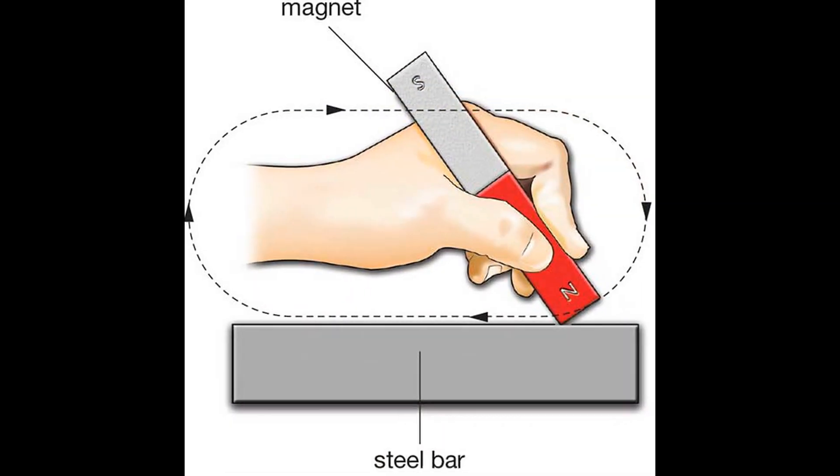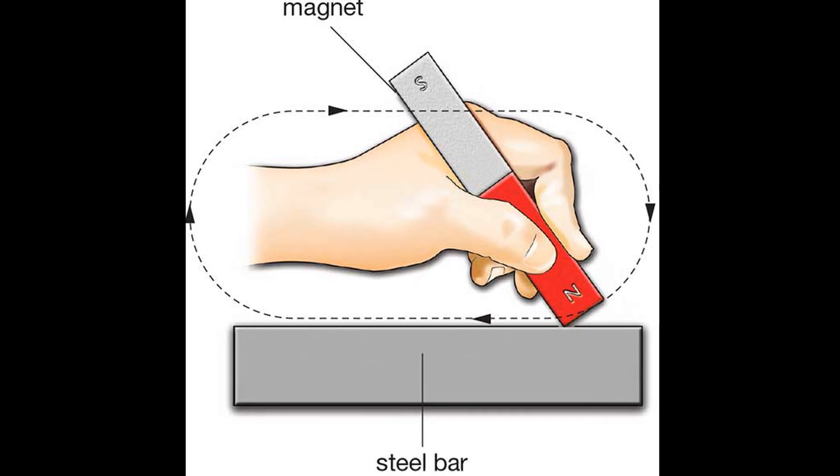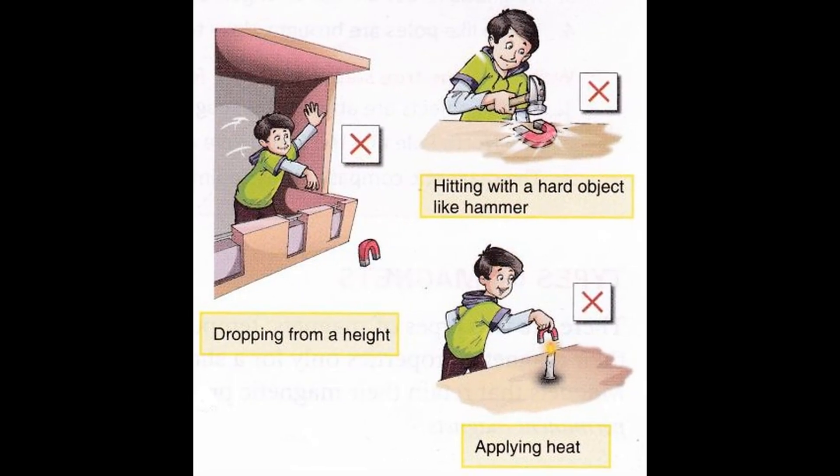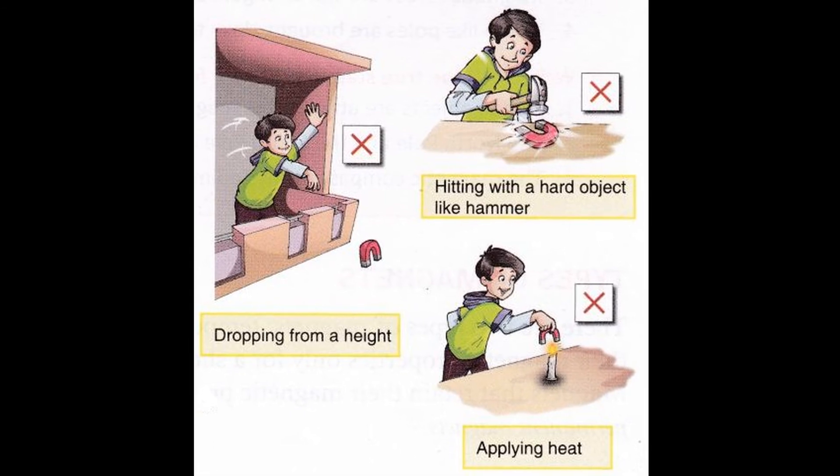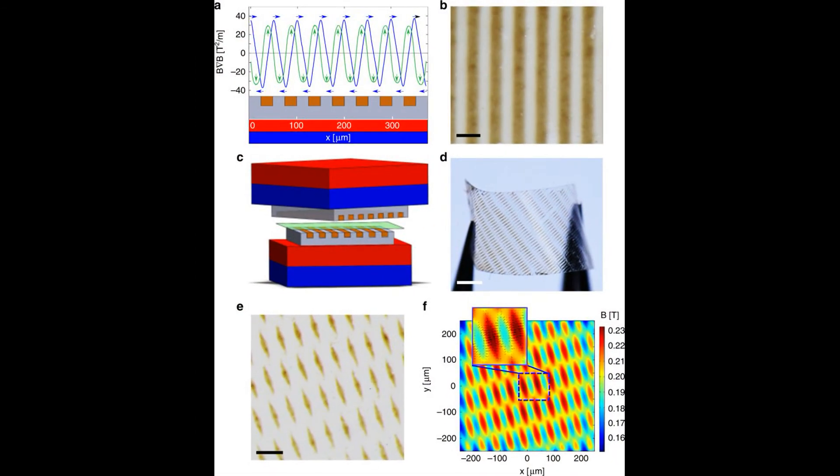Demagnetization. A magnet can lose its magnetism if it is stored by itself without a keeper. It can also lose its magnetism if it is hammered, dropped from heights or heated. This is because the domains get jumbled up and their poles push apart.